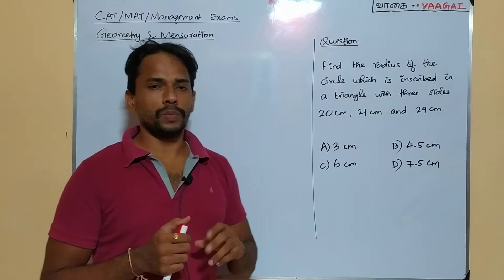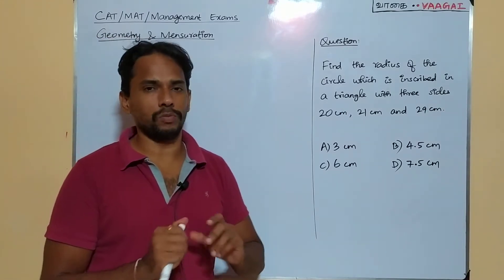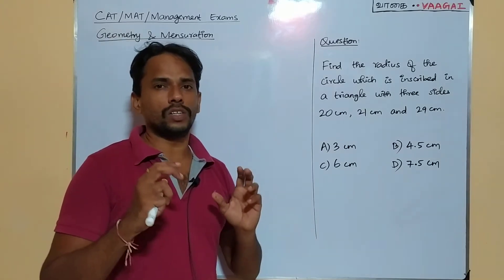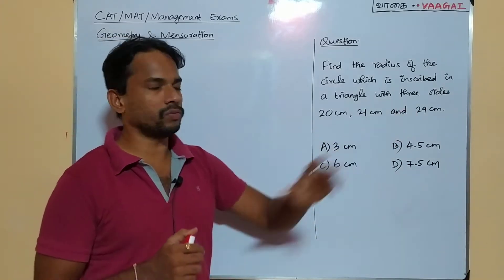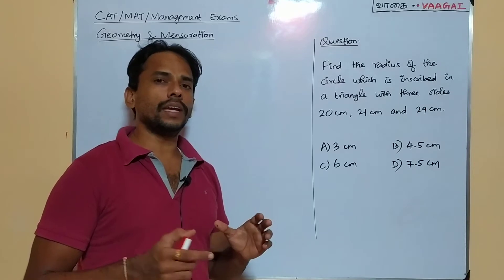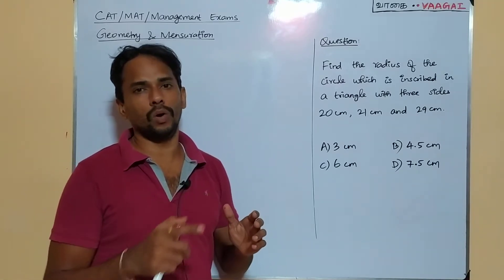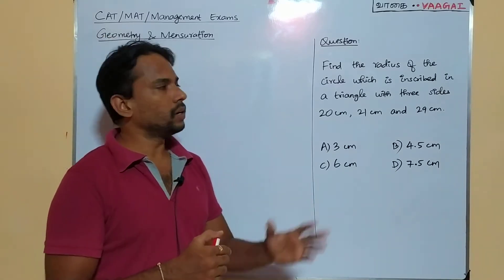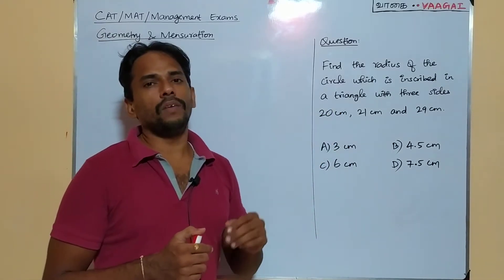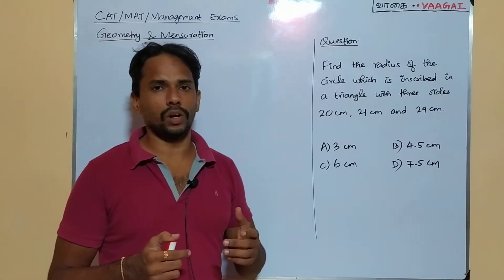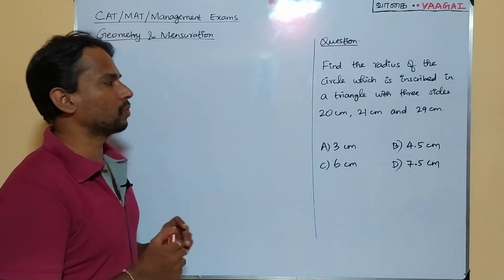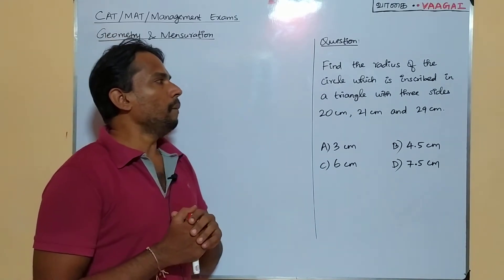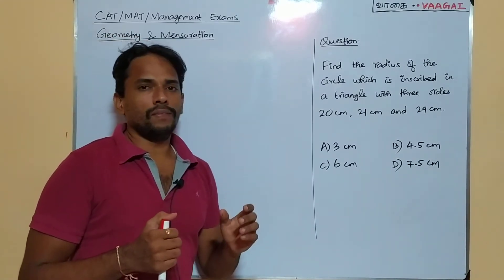The question appears to be very simple — a basic kind of question from geometry. We are given a triangle with three sides, and inside the triangle a circle is going to be positioned — the circle is going to be inscribed inside the triangle — and we need to find the radius of that circle. It's a very simple question and we have the options.